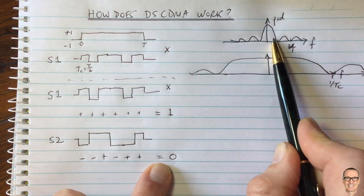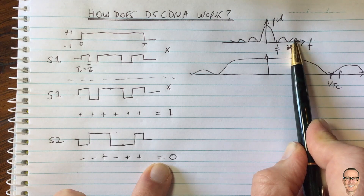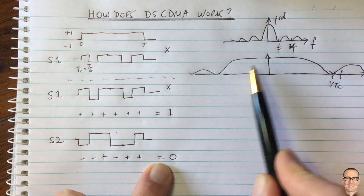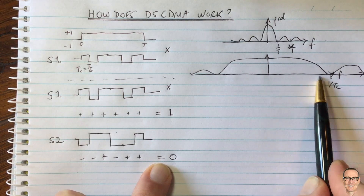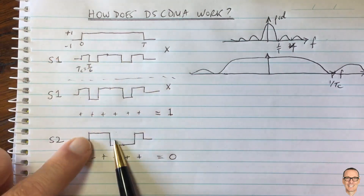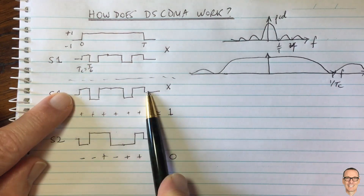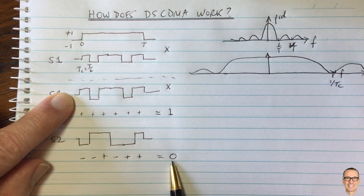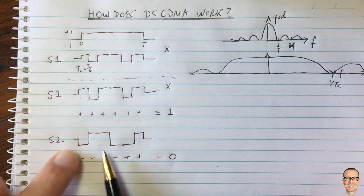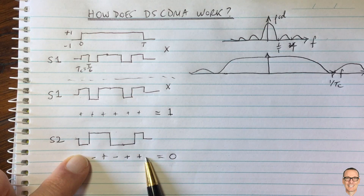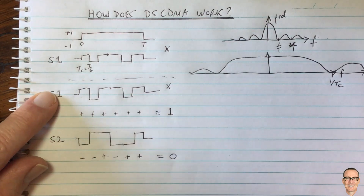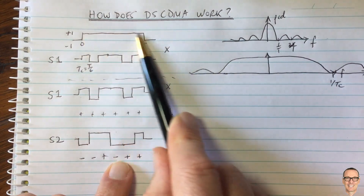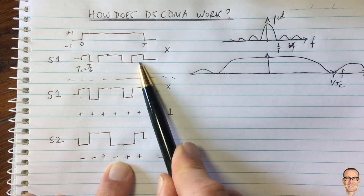We're using more bandwidth, but instead of using a different frequency range for the other user, all of us are sending over the same frequency range at the same time. Because we have different codes which are orthogonal, at the receiver, if we use our code we only get our signal - plus or minus one - and the contribution from other users is zero. Likewise, at the other user's receiver, they use their code, get plus and minus ones for their signal, and get zero contribution from our signal. This is called direct sequence because we're directly multiplying our symbols by our sequences.